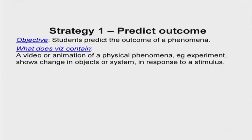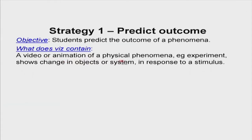Now let us dive into three different strategies. The first strategy we are calling 'predict outcome.' Here the learning objective is that students should be able to predict the outcome of a physical phenomenon. The visualization — animation, simulation, or video — shows a physical phenomenon, such as an experiment where you increase current and observe what happens to voltage, or the speed of a car is increased and you ask what happens to its trajectory.